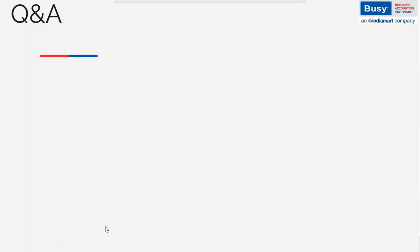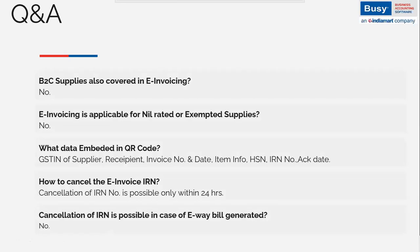Can you cancel an IRN if an e-waybill has been generated? If you have generated both e-waybill and e-invoice for a transaction, it is not possible to cancel the e-invoicing because the e-waybill has already been generated for that transaction. Busy provides the option to generate both e-waybill and e-invoice simultaneously — if both are generated, cancellation of e-invoicing for that transaction is impossible.